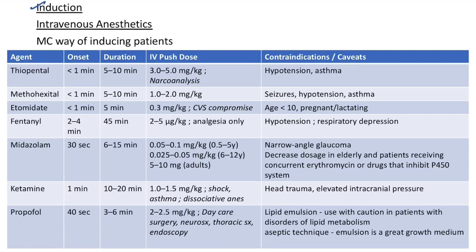Now let us see about anesthesia induction. Intravenous anesthetics are the most common way of inducing patients. For all intravenous anesthetic agents, the onset of action is very quick and the duration of action is also very short. Thiopental is given in the dose of 3 to 5 mg/kg and is used in narcoanalysis. Contraindications for thiopental are hypotension and asthma. Contraindications for methohexital are seizures, hypotension, and asthma.